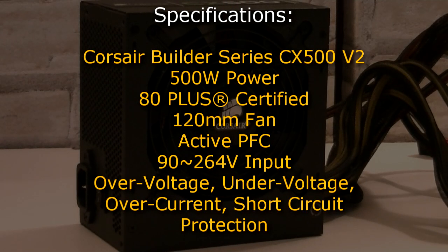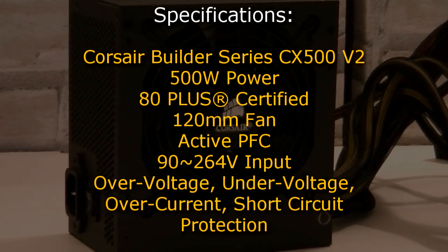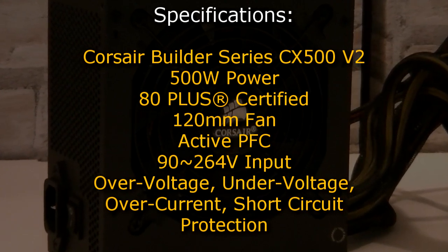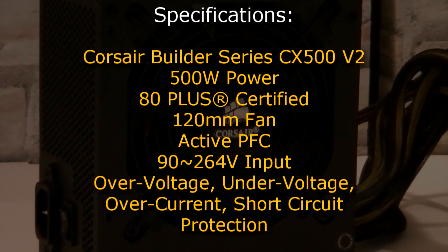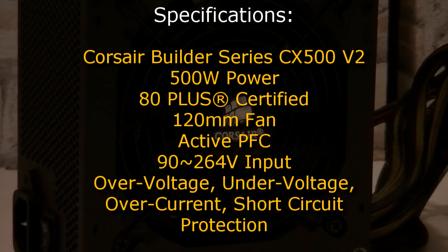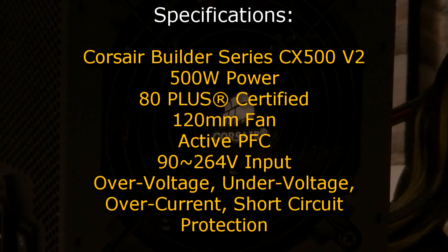Now to the specifications. The Corsair Builder CX 500 version 2 delivers 500 watts of power and is 80 plus certified. The 120 millimeter fan will keep everything cool and quiet and active power factor correction is featured as well. An input of 90 to 264 volts is allowed and of course this unit has over voltage, under voltage, over current and short circuit protection.